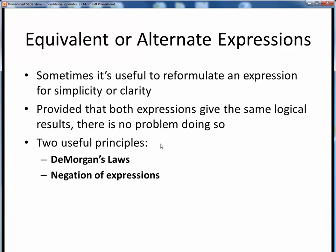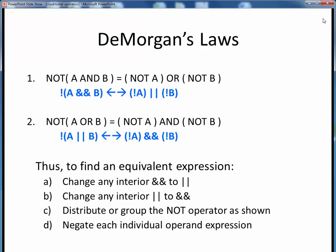There are two useful principles we'll look at next that will help us in this regard: DeMorgan's Laws and the negation of expressions. DeMorgan's Laws are a pair of logical equivalences from Boolean logic, which tell us that if we have some logical expression that resembles one of these forms, we can transform that expression into a potentially simpler but logically equivalent form.